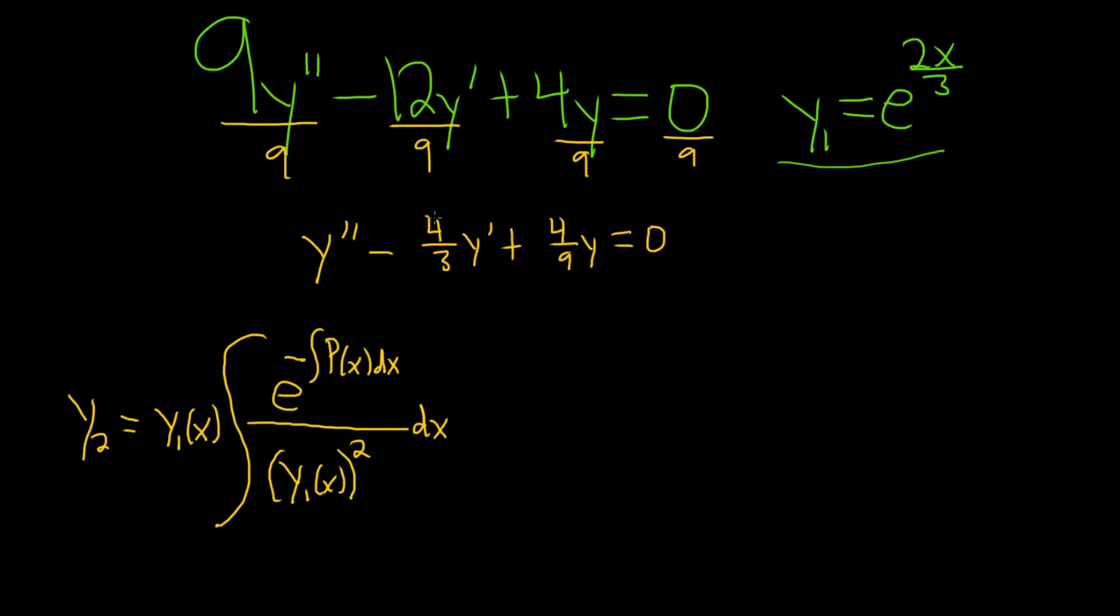All right, so big P is going to be negative 4 thirds. It's whatever is here when it's written in the standard form. That's why it was so important to divide by the 9. It's very key.